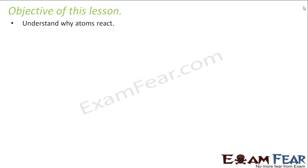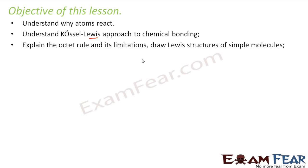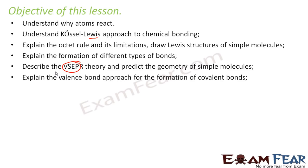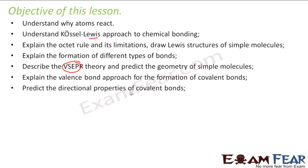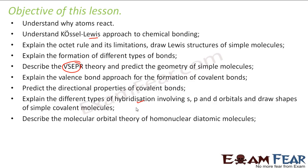The objective of this lesson is to understand why atoms react. We'll also understand the Lewis approach to chemical bonding. We'll try to explain the octet rule and its limitations. We'll explain formation of different types of bonds. We'll describe various theories that predict the shape of the molecule — the VSEPR theory and valence bond approach. We'll predict the directional property of covalent bonds, explain different types of hybridizations, explain the molecular orbital theory, and touch upon the hydrogen bond.